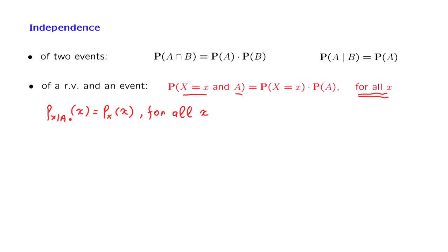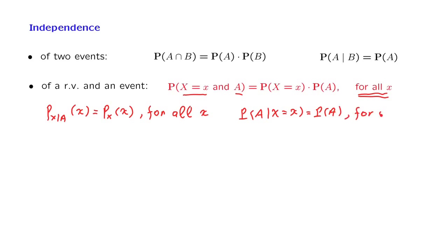That is, when an event occurs, the probability of any particular little x is going to be the same as the original unconditional probability. We also have a symmetrical interpretation: if I tell you the value of X, then the conditional probability of event A is not going to change — it's going to be the same as the unconditional probability, and this is going to be the case for all values of x. So no matter what I tell you about X, your beliefs about A are not going to change.